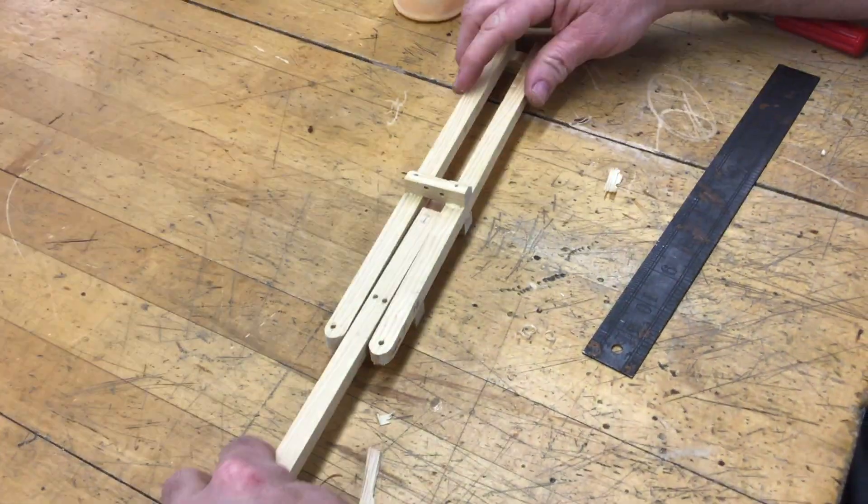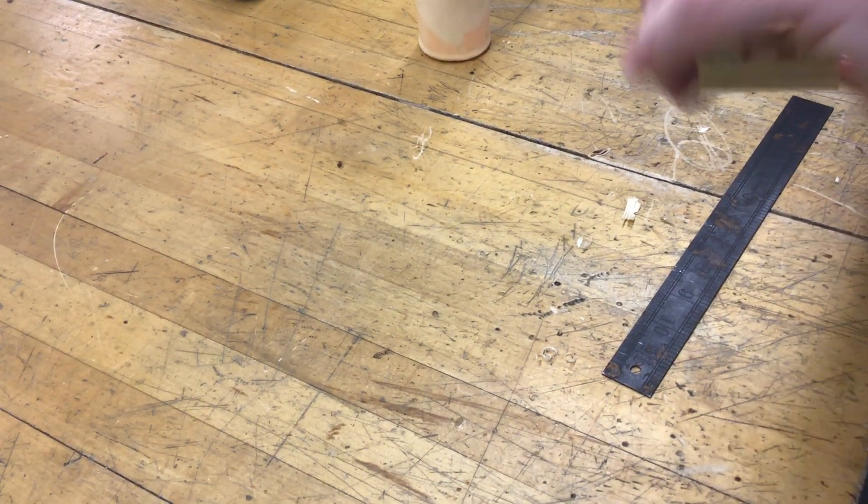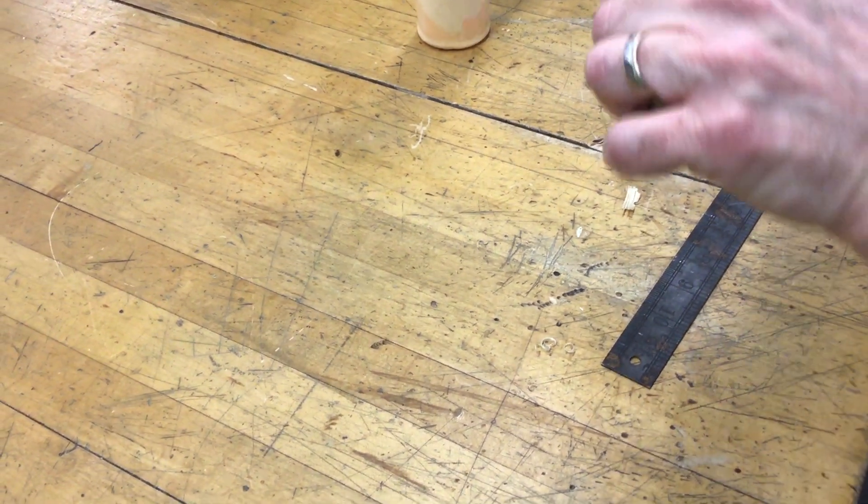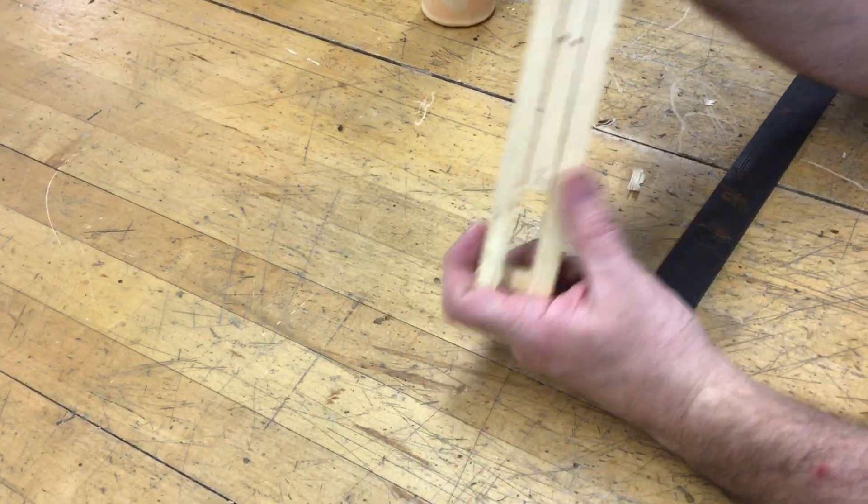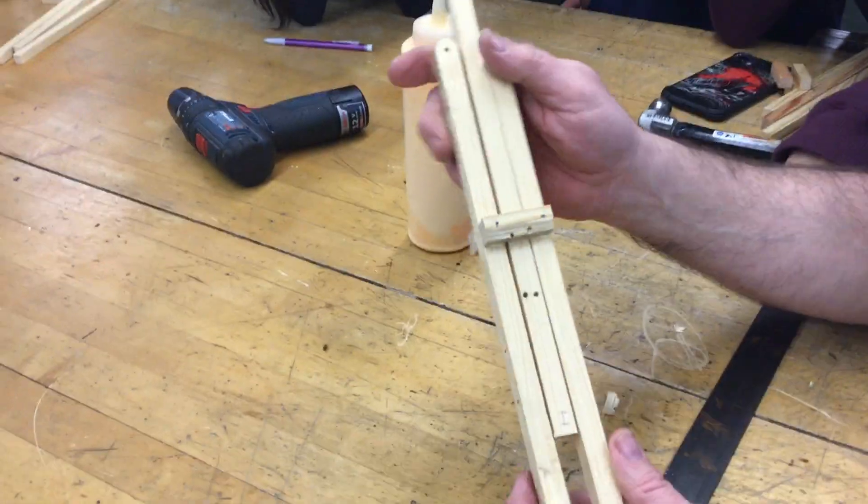And this piece should fit back in. So this is a little bit tight—that's okay, I just take it over to the belt sander and smooth that out. But this is what it should look like when you're done. You can stop that.